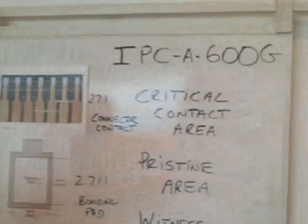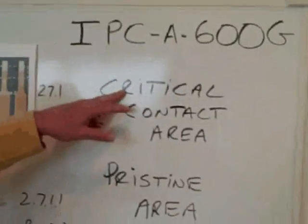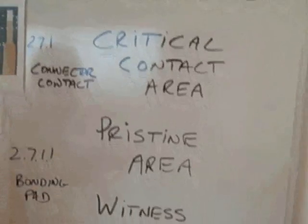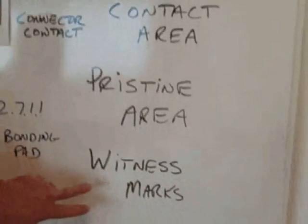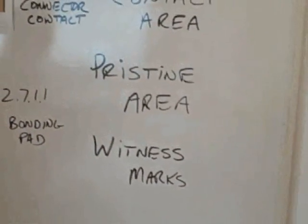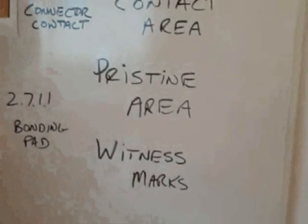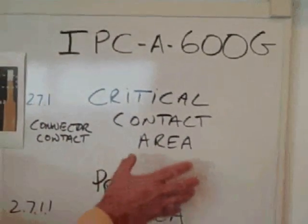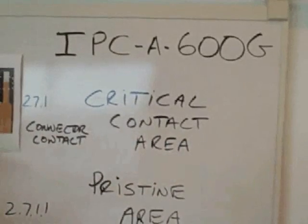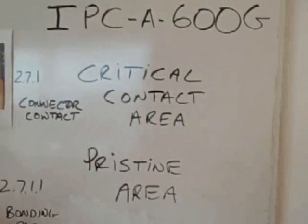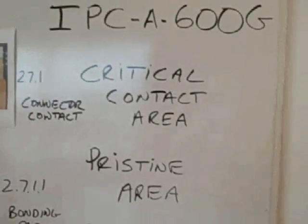Looking at the reference, the question was related to the terms 'critical contact area' and 'pristine area,' and while we're talking about that, I'm going to discuss witness marks a little bit. The questioner was asking: what's the difference? Why is there a difference in the specifications talking about critical contact area versus pristine area, and how does IPC differentiate?